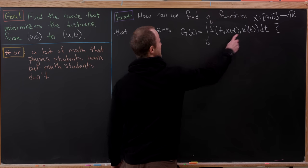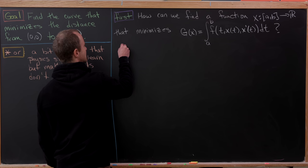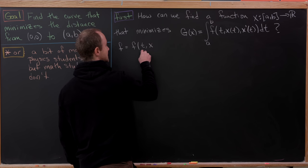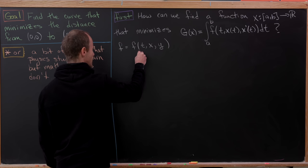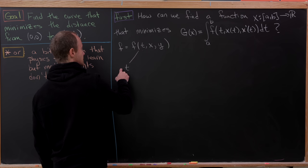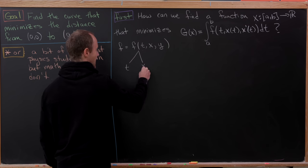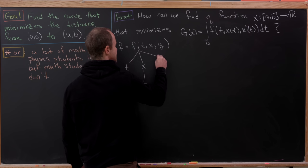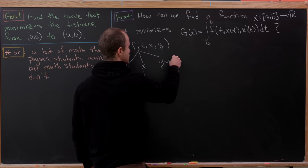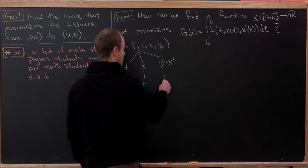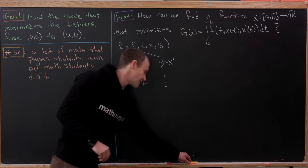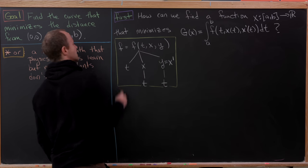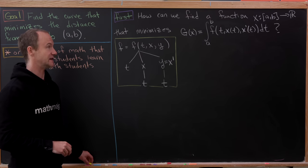To do that, let's think about f, the function on the inside first. Notice that f is really a function of three variables: t, x, and y. But we have a functional dependence tree: f depends on t, it depends on x which depends on t (since x is a function of t), and it depends on y = x′, which also depends on t. We'll keep this tree diagram of variable dependence in mind because it allows us to apply the chain rule as needed.